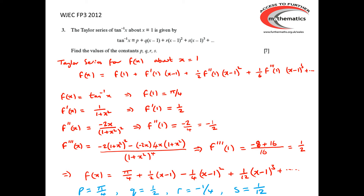The marking for this question: the first mark is for finding that f(1) = π/4, i.e. p = π/4. The second mark is for the differentiation of f and the value of f'(1), giving two marks. The next two marks are for obtaining f''(x) and the value of f''(1). The final two marks are for finding f'''(x) and consequently f'''(1), and then writing down the values of p, q, r, and s.